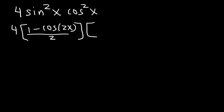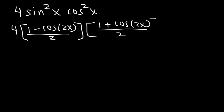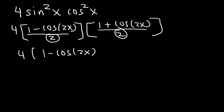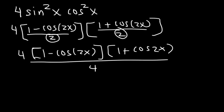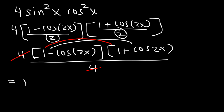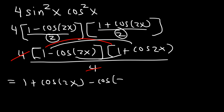The power reducing formula of cosine squared is 1 plus cosine 2x divided by 2. Since 2 times 2 is 4, we have 4 times (1 minus cosine 2x)(1 plus cosine 2x) all divided by 4, and the 4s cancel. Now let's FOIL these two expressions: 1 times 1 is 1, 1 times cosine 2x is cosine 2x, negative cosine 2x times 1 is negative cosine 2x, and negative cosine 2x times positive cosine 2x gives negative cosine squared 2x.